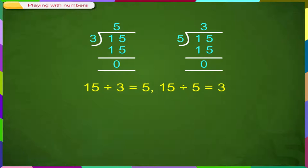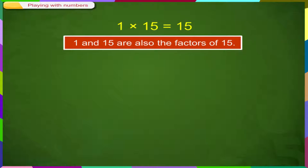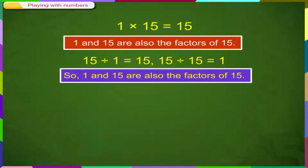So, 3 and 5 are called the factors of 15. Consider another example. 1 into 15 is equal to 15. 1 and 15 also divide 15 exactly. 15 divided by 1 is equal to 15. 15 divided by 15 is equal to 1. So, 1 and 15 are also the factors of 15.